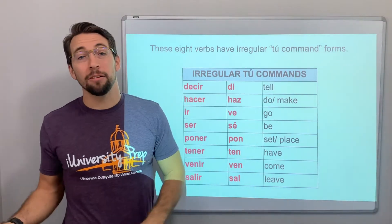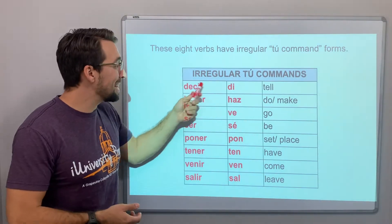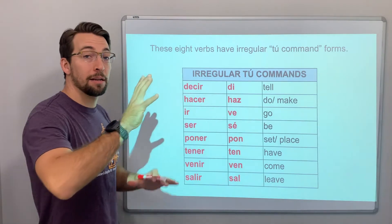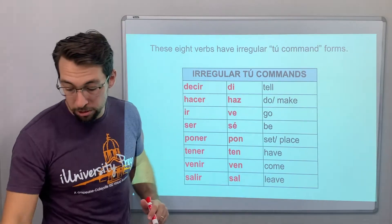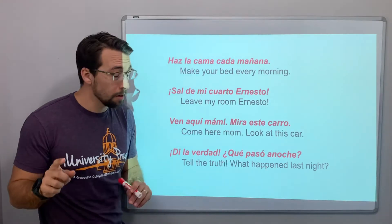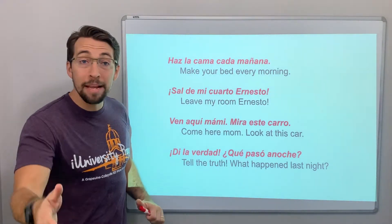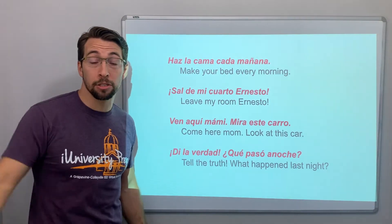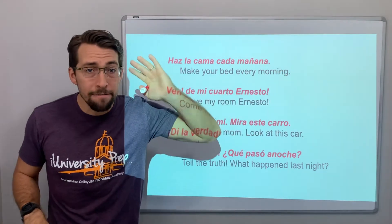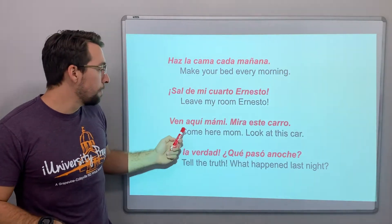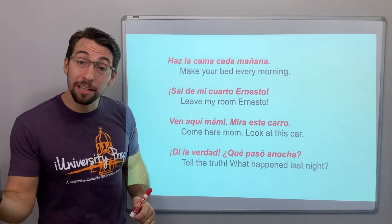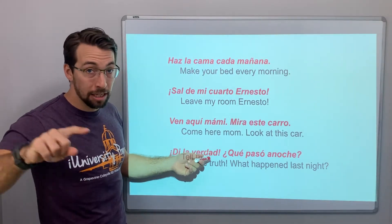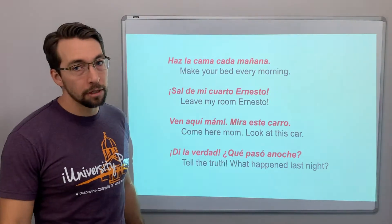These eight verbs are irregular — they're monosyllabic commands. This is not the introduction; you should know this. Watch the introduction to tú commands if you need it. Sal de mi cuarto, Ernesto — get out of my room. Ven aquí, mami — come here, mom. Mira este carro — look at this car. Di la verdad — tell the truth. ¿Qué pasó anoche? What happened last night?